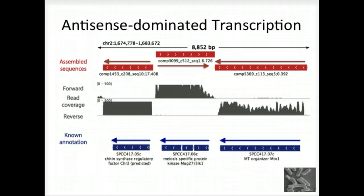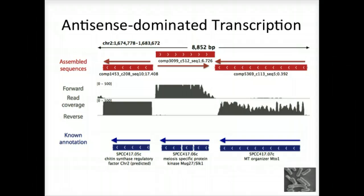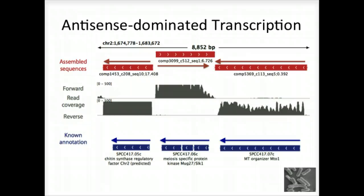Here's another example in fission yeast that highlights the importance of strand-specific RNA-seq. This region of the genome encodes three genes that are all encoded on the same strand. From the RNA-seq coverage plots, we can see that the two genes on the end are transcribed on their coding strand, but the central gene encoding a meiosis-specific protein kinase is dominated by transcription on the opposite strand. This antisense transcription is thought to play an important role in the regulation of meiotic genes in fission yeast, and would have gone unnoticed if we hadn't used strand-specific RNA-seq.